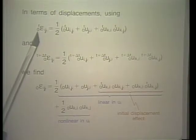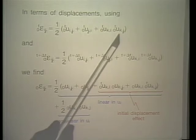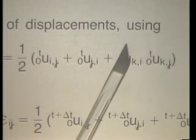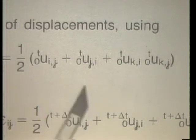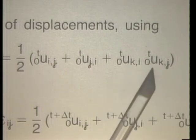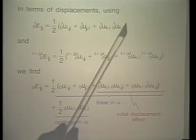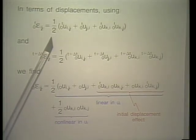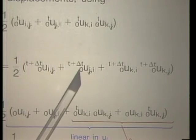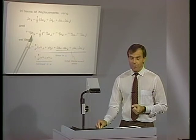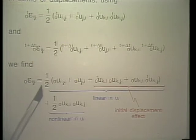In terms of displacements, the Green-Lagrange strain at time t is written out with its components. Notice there is a product of displacement derivatives — a nonlinear term — but nothing has been neglected. We have only quadratic terms; there are no cubic or higher order terms. This strain measure holds for any amount of deformation and strain. The Green-Lagrange strain at time t plus delta t follows the same form, and subtracting yields the strain increment.